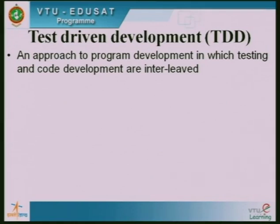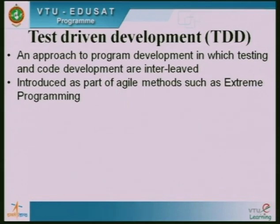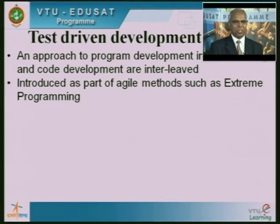Interleaved means a portion of code is developed, it is tested, then the next portion is developed, then it is tested — like that, testing and development go hand in hand. This was introduced as part of agile methods such as extreme programming. Earlier, development was done and testing was done later. Once agile methods were introduced, this kind of test-driven development became a normal practice.